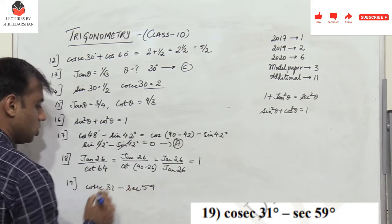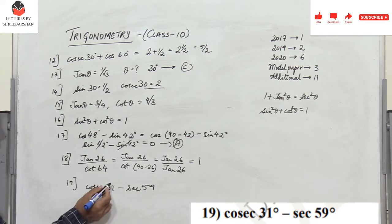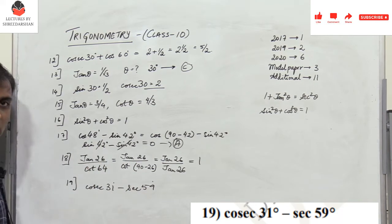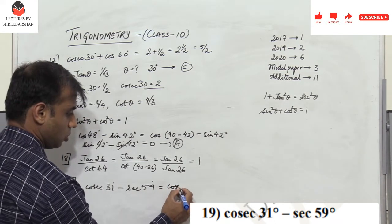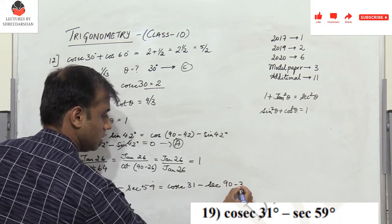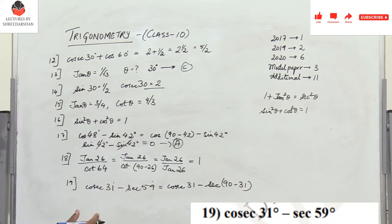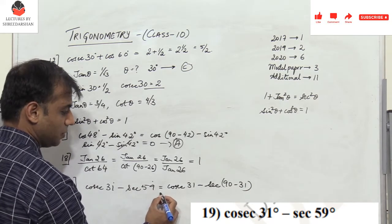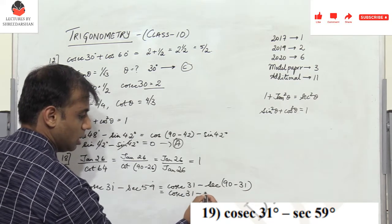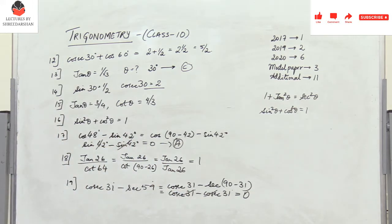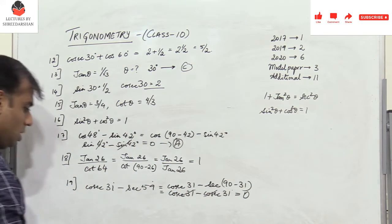Problem 19: cosec31° − sec59°. Since 31 + 59 = 90°, we write sec59° = sec(90° − 31°). Since sec(90° − θ) = cosecθ, this becomes cosec31° − cosec31° = 0. Remember: whenever the degrees add up to 90°, you can express one trig function in terms of the other.